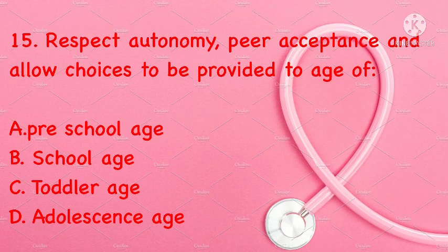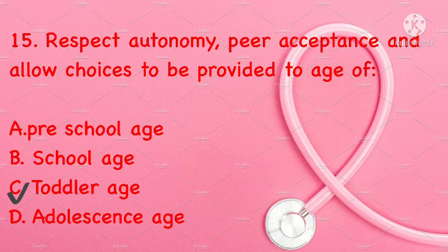Respect, autonomy, peer acceptance and allowing choices should be provided to which age group? Preschool age, school age, toddler age, or adolescence age. Correct answer is C: toddler age.